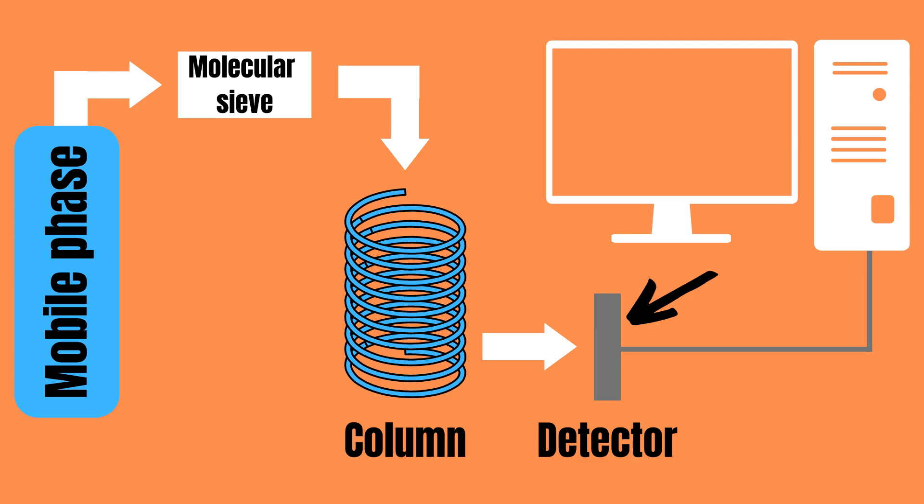GC is carried out in the following manner. First the sample is introduced into the gas chromatograph right before the column, often using a syringe.